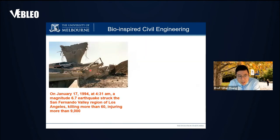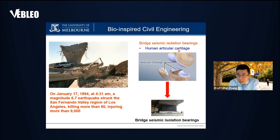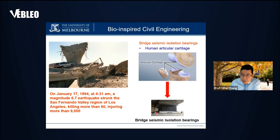Another example: on January 17th, 1994, a magnitude 6.4 earthquake struck the San Bernardino Valley region of Los Angeles, killing more than 60 people and injuring more than 9,000. The collapse was partly due to seismic isolation bearings not working. Human articular cartilage — only three millimeters of soft tissue — can absorb shocks, last a lifetime, and resist wear. If we apply cartilage knowledge to bridge seismic isolation bearing design, we can significantly improve earthquake resistance.